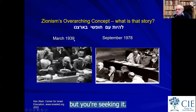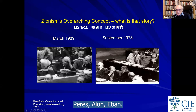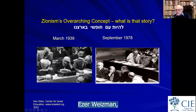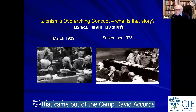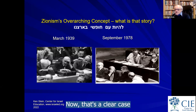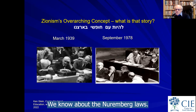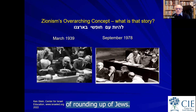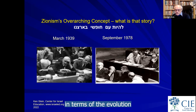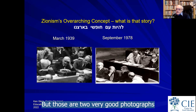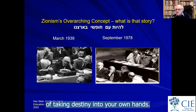In 1939: no control over your own destiny, but you're seeking it. Then September 27th, 1978: Peres, Alon, Iban, Simcha Ehrlich, Menachem Begin, Chaim Weizmann, Yigal Yadin — all debating whether they should accept the negotiated settlement with the Egyptians that came out of the Camp David Accords two weeks earlier. That's a clear place of self-determination. The first photo is a clear case of knowing about the Nuremberg laws, Kristallnacht — and not yet knowing what will happen in terms of the Final Solution. Two very good photographs that describe the whole concept of taking destiny into your own hands.